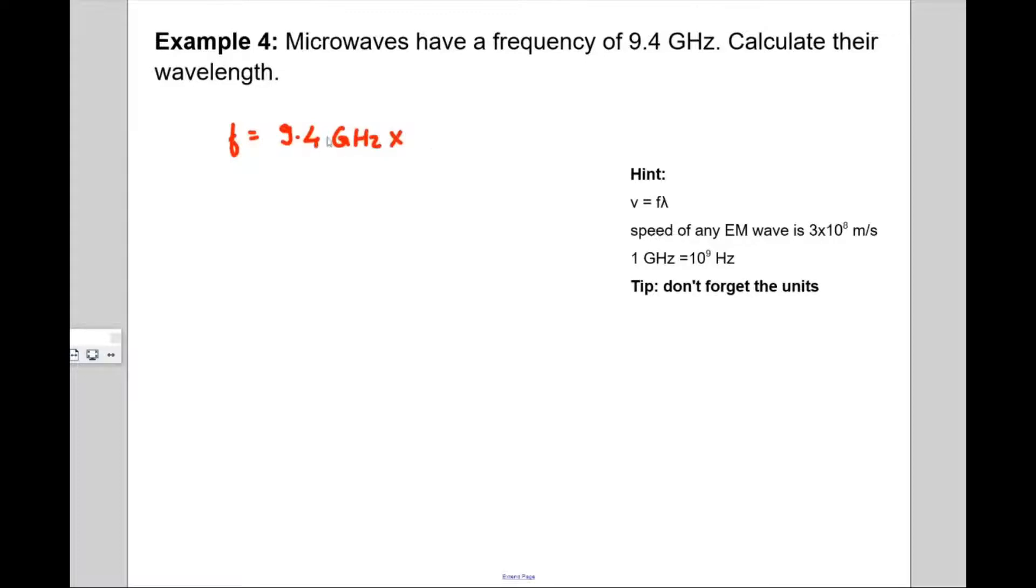Now the first thing which in any numerical problem that I prefer to do is as I'm writing the values and relating it with symbols, I try to convert them into SI units. So 1 Gigahertz is 10 to the power 9 Hertz. So if you convert 9.4 Gigahertz into Hertz, you have to multiply it by 10 to the power 9.